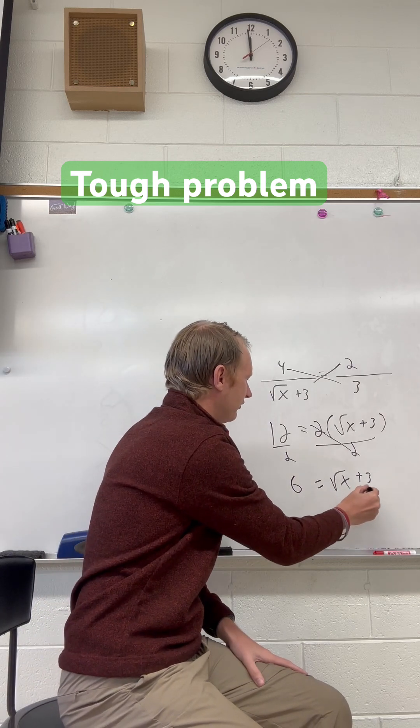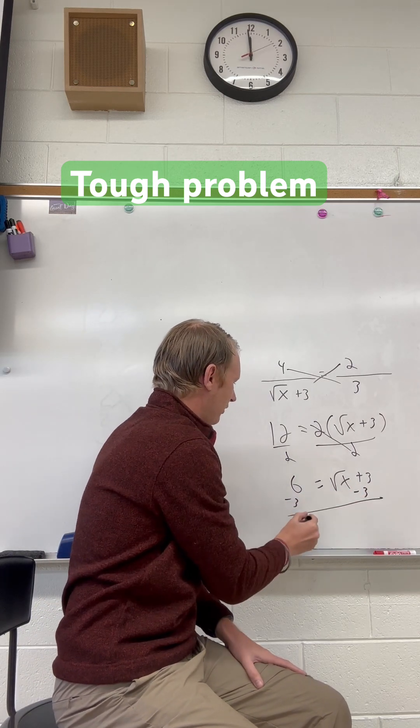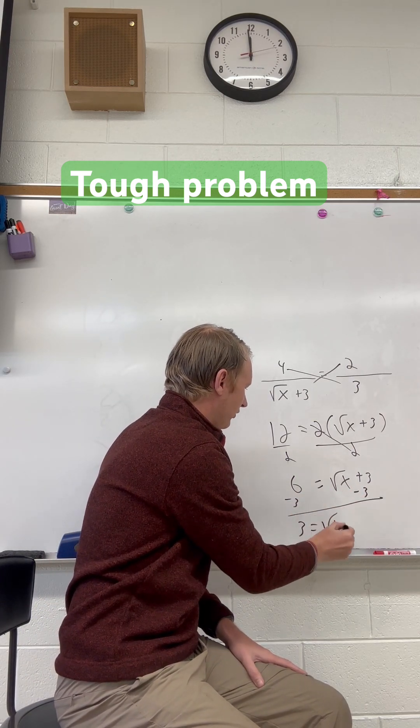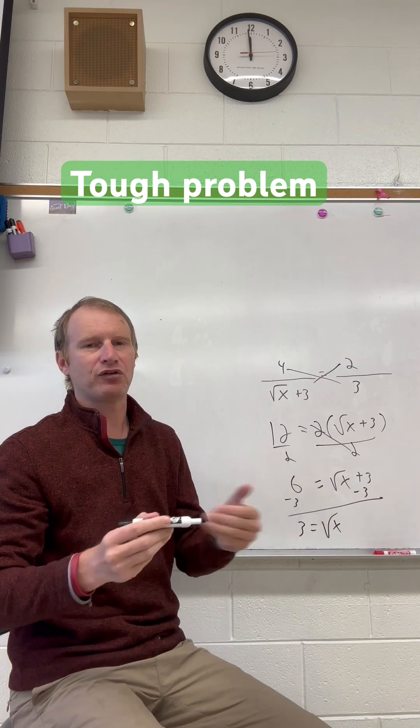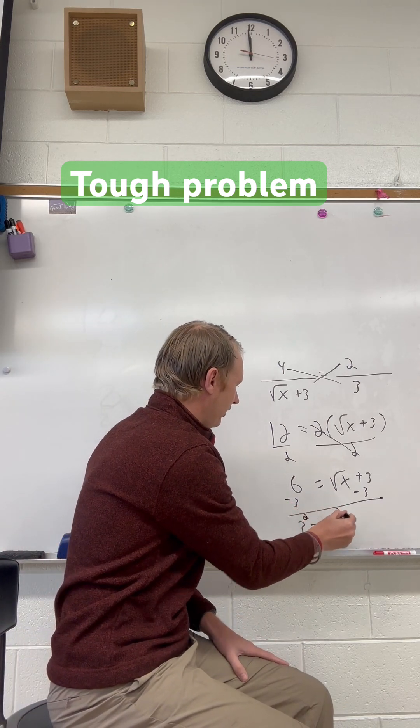Now I'll subtract 3 from both sides, and that gives me 3 equals the square root of x. So if 3 equals the square root of x, we're almost done. Just square both sides,